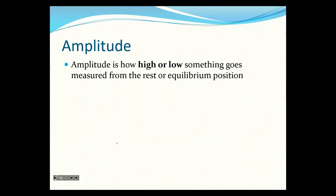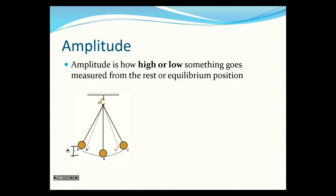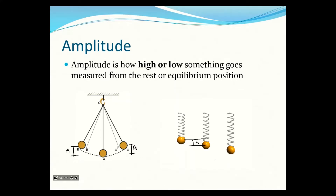Amplitude is how high or low something goes, measured from the rest position. If we're talking about the amplitude of a pendulum, it's just that height from the rest position. You can also do it with a spring bobbing up and down — the amplitude is how far it moves from equilibrium.